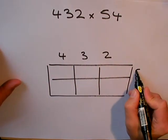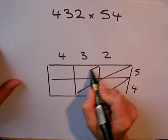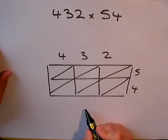432 multiplied by 54. I'm going to draw my diagonals in. Then I'll be able to add up later.